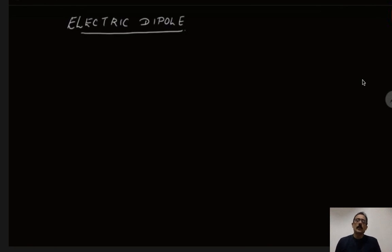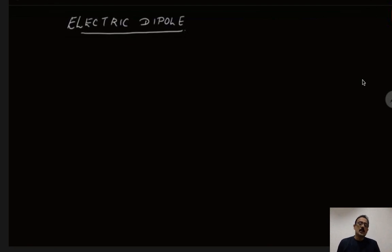Hello dear students, today we will be dealing with the topic electric dipole. 'Di' means two and 'pole' means two ends or polarity. For an electric charge, there can be a positive charge and a negative charge. Two equal and opposite charges placed at a very small vector distance are called an electric dipole.